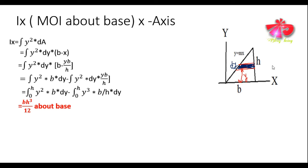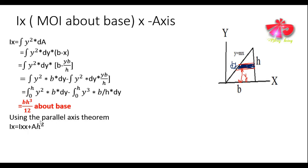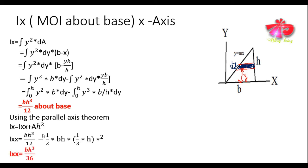For the moment of inertia about the centroidal x-axis, we use the parallel axis theorem: Ix = Ixx + Ah². Rearranging gives us Ixx. The perpendicular distance h here is from the base to the centroid. Since the centroid is located at h/3 from the x-axis, we substitute that value and can easily get Ixx — the moment of inertia about the centroidal x-axis of this right angle triangle.